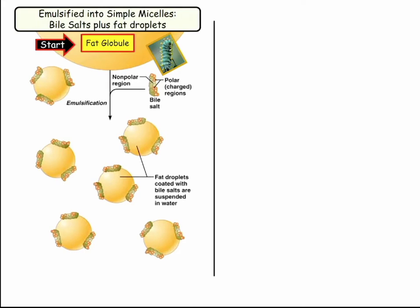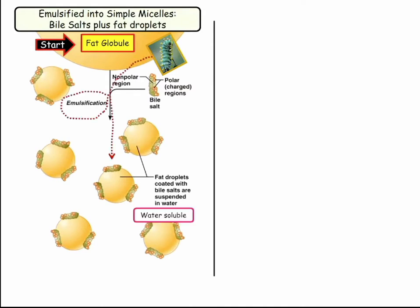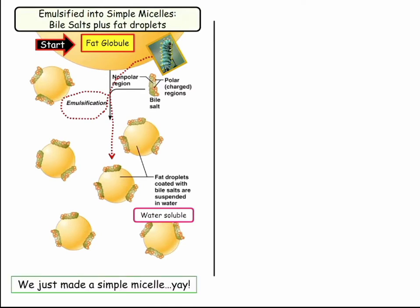Think of bile salts like tomato worms — they attach to these triglyceride fat globules for the purposes of emulsification. The fat with bile salts becomes water soluble.